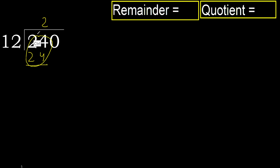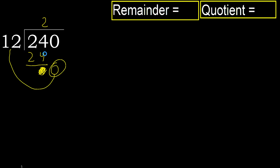Okay, subtract. 24 minus 24 is 0. Next. Bring down 0 here. 0 is less, therefore next.